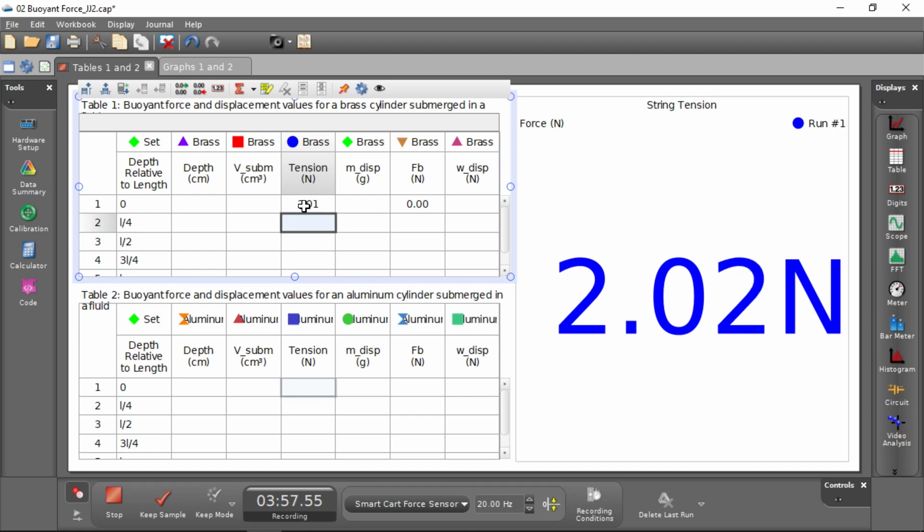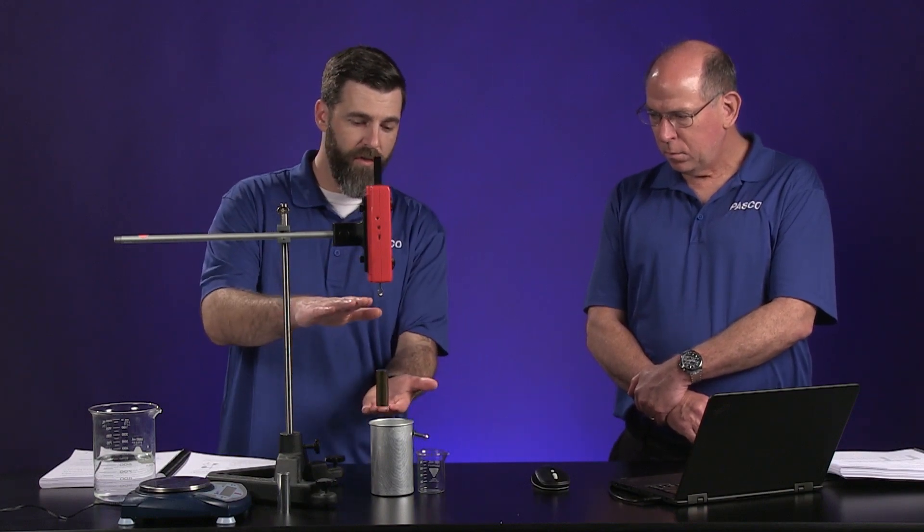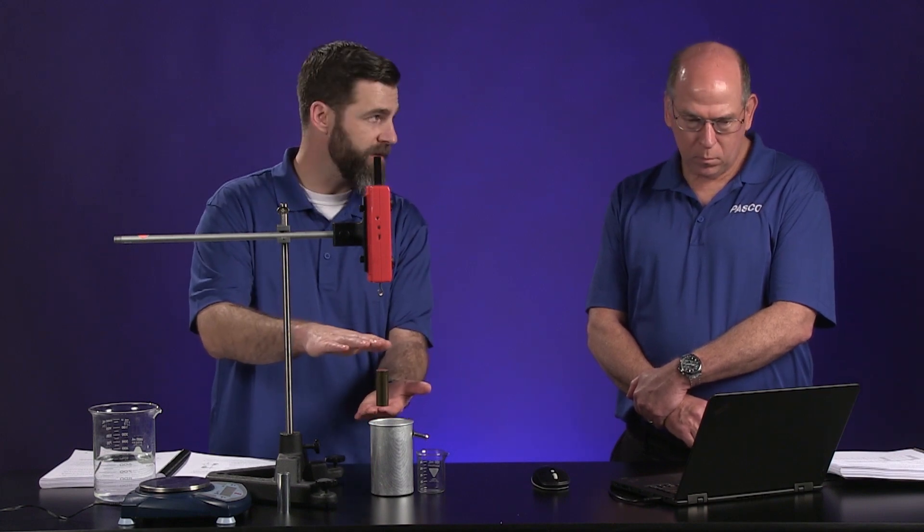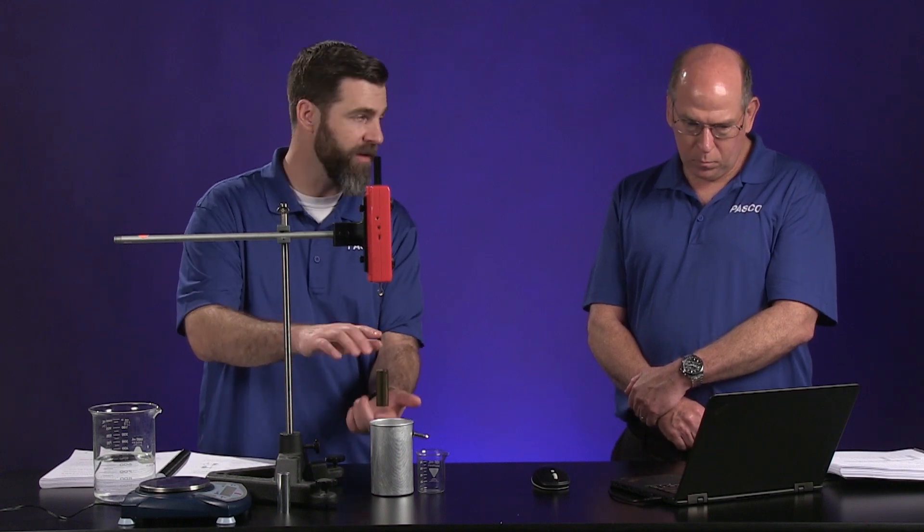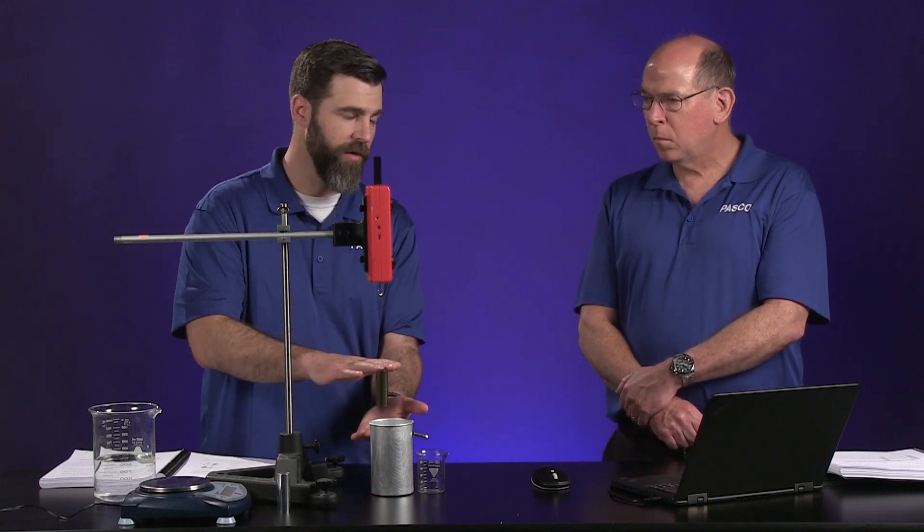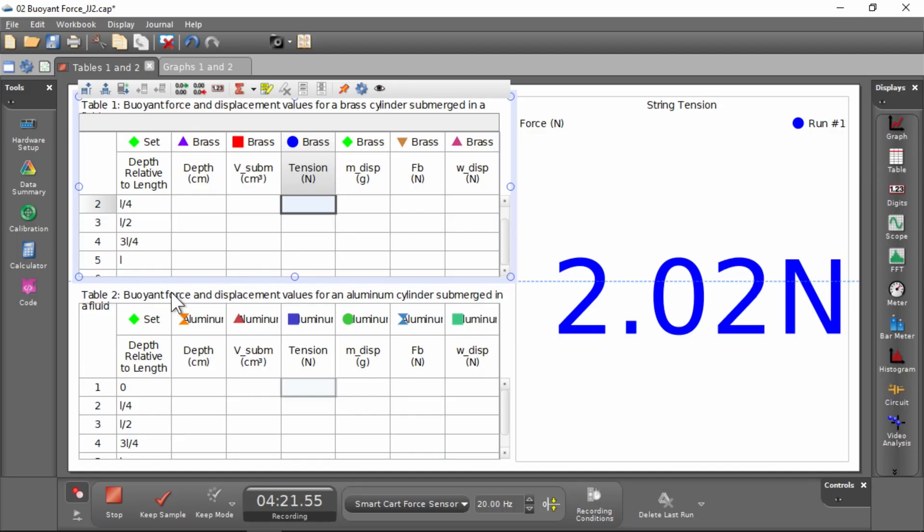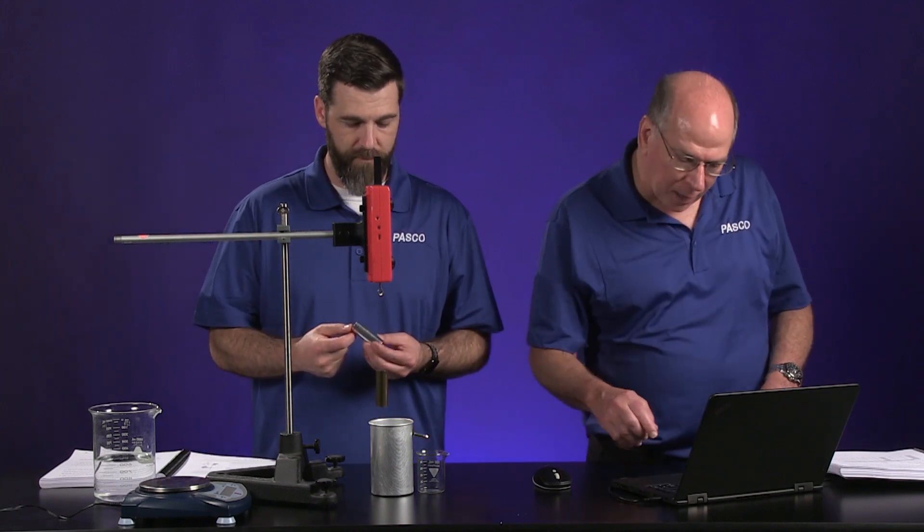Now it says here in the data table we're going to submerge it one quarter its length. So in the experiment we're going to collect one, two, three, four, five data points: one when it's not submerged at all, one when it's a quarter, one when it's half submerged, three quarters, and then completely submerged. We'll need to know that total length, so I'll enter that in the data table as the depth when the whole thing is submerged. Each one of these cylinders is 6.5 centimeters.